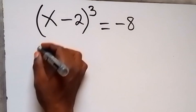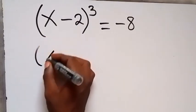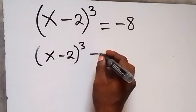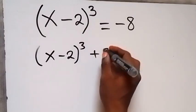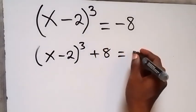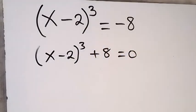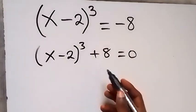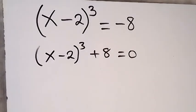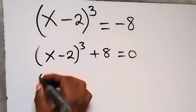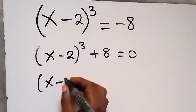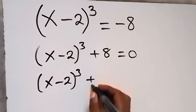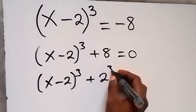From here, let's take this minus 8 to this side and we have x minus 2 raised to power 3 plus 8 equals to 0. We can also express 8 as a number raised to power 3, that's 2 raised to power 3. So this becomes (x - 2)³ + 2³ = 0.